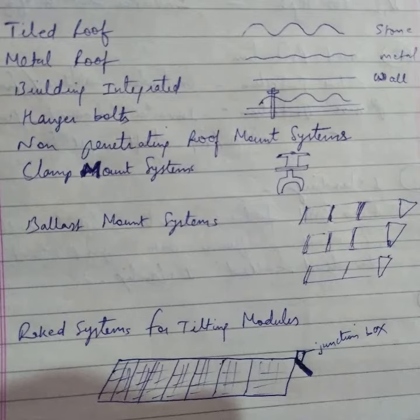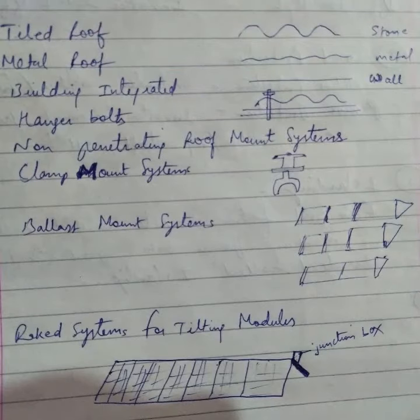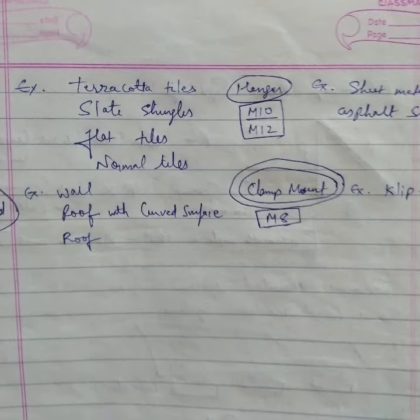The second is the metal roof - a simple shape with metal materials. The third one is building integrated, where tiles should be implemented on walls.